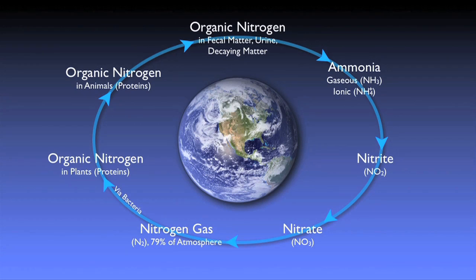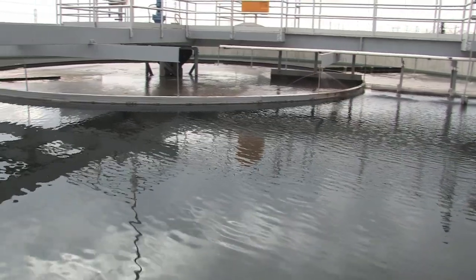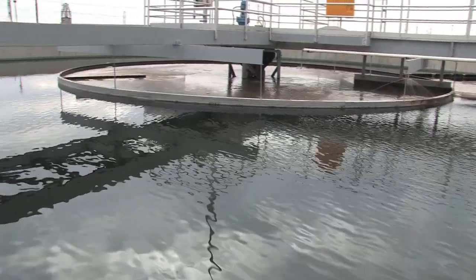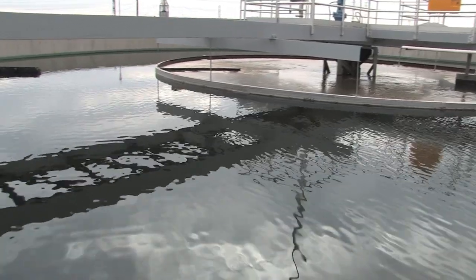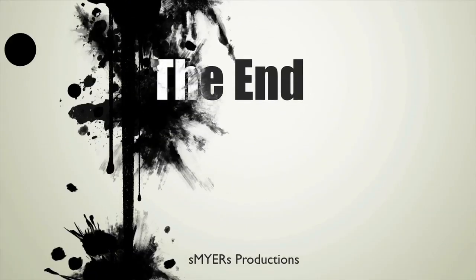In summary, a wastewater treatment plant helps nitrogen through the nitrogen cycle by optimizing conditions for nitrification and denitrification. By so doing, wastewater treatment plants help minimize the human impact on our fresh waterways and environment. We'll see you next time.